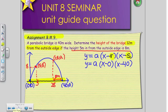So when you actually write that out, y is equal to a, x minus 0 is just x, and multiply by x minus 40.